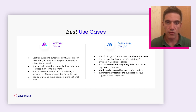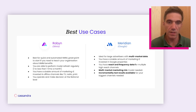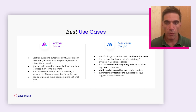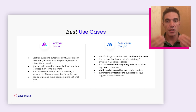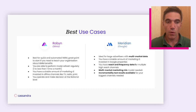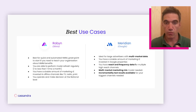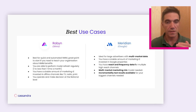Coming to best use cases — we rely on our expertise at Cassandra and experience with our clients. We always recommend consulting with either Cassandra or someone you trust who has both a data science background and business acumen. If you are starting with marketing models and trying to teach yourself and your organization about the benefits of marketing models, Robyn is a great starting point. If you're able to refresh your model monthly with a new set of data, Robyn is also great. And if you have a media mix spread across online and offline — for instance TV and online channels — Robyn is also a great starting point.